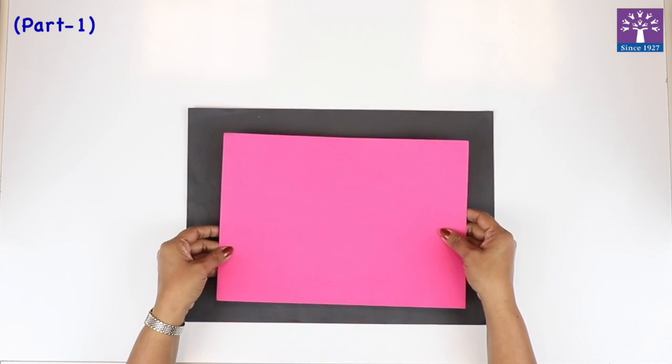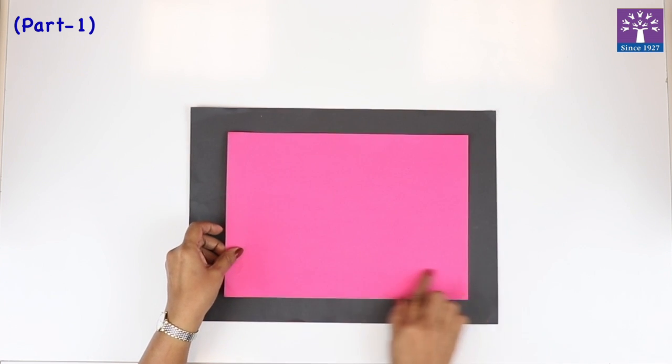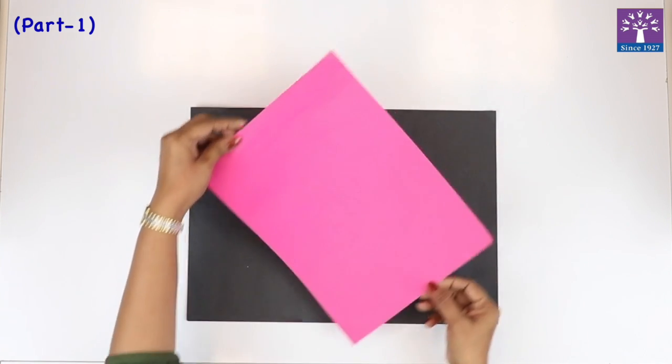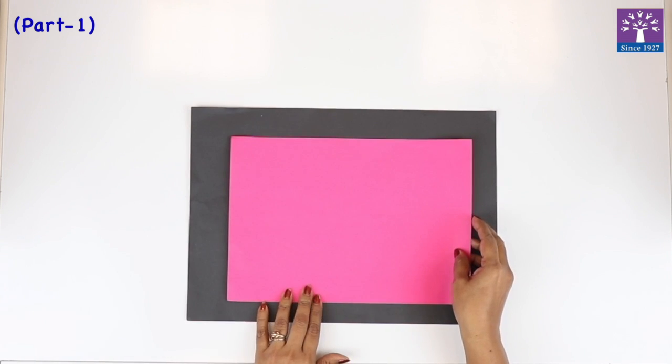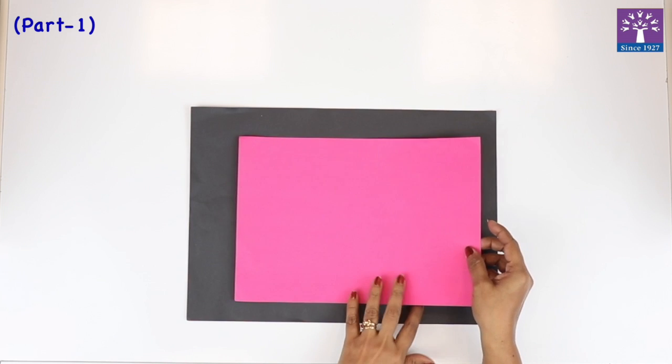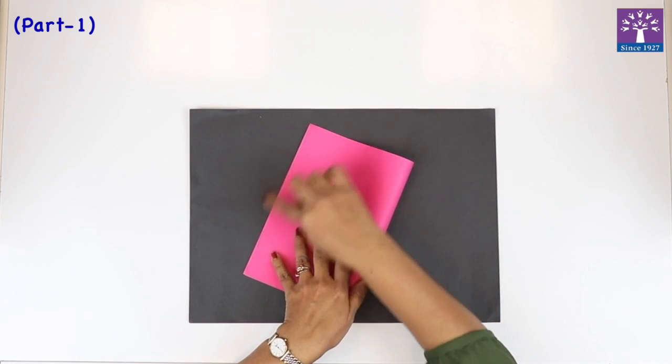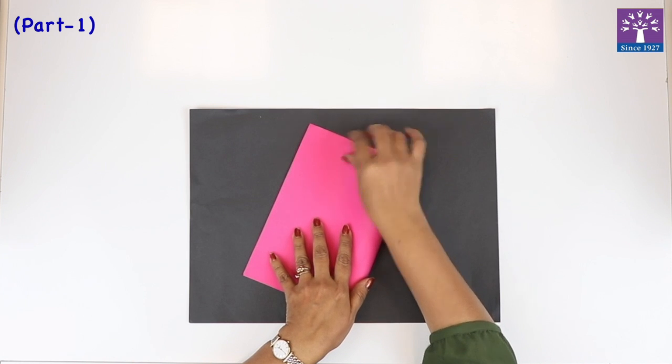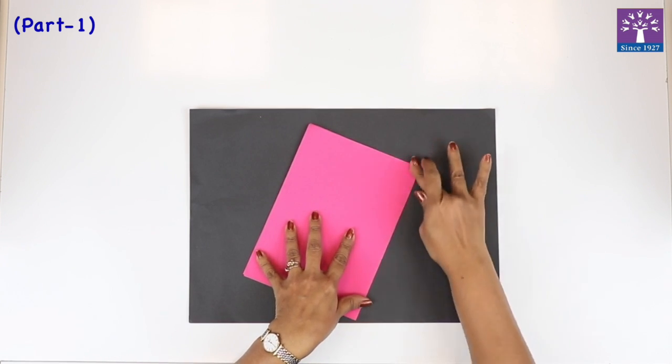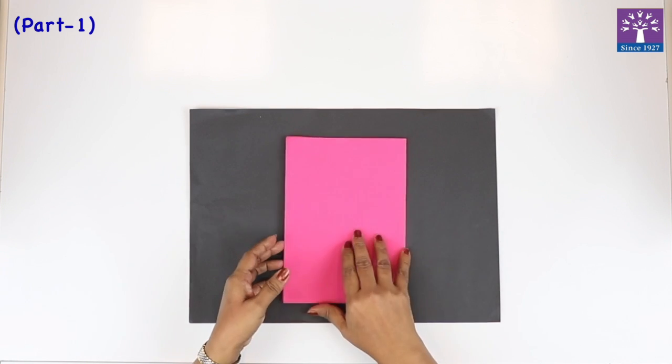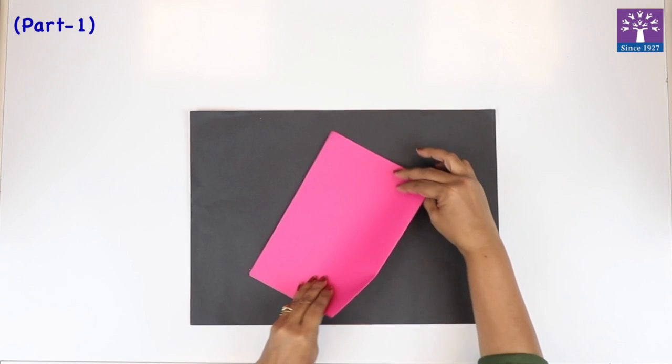This is a vertical paper, this is a horizontal paper. For this activity, we're going to hold the paper horizontally. We're going to fold this paper four times, corner to corner. See, we're joining the corner properly. The line is straight. This is one. See, this was the paper, we folded it once. Now one more time.